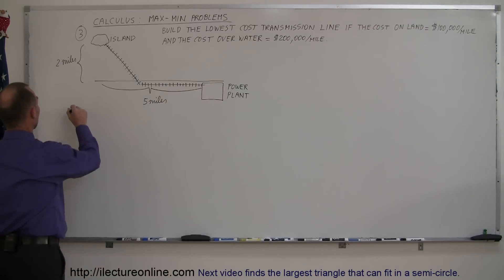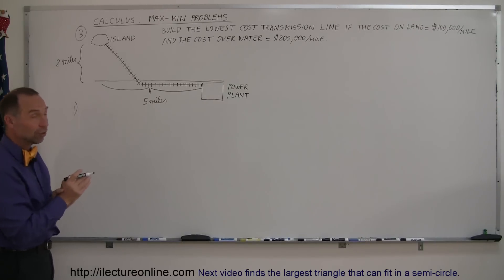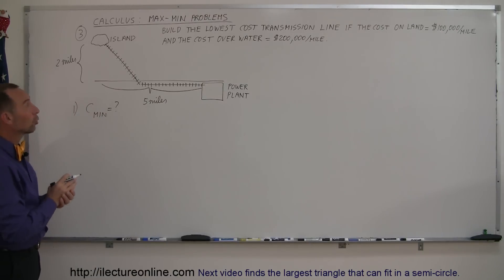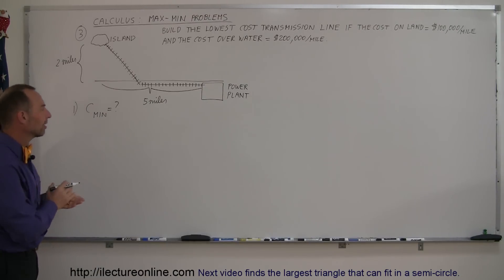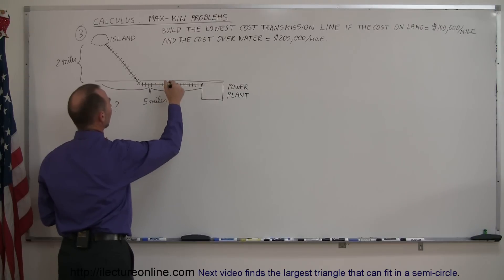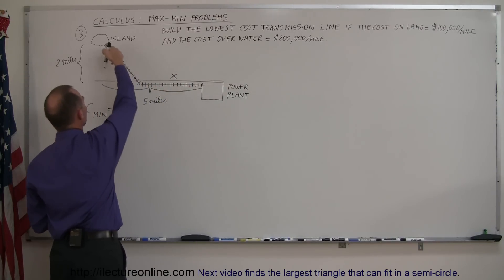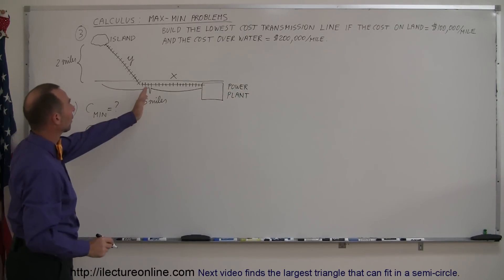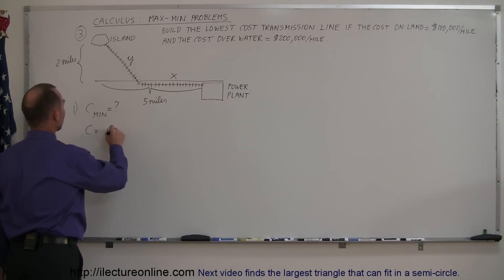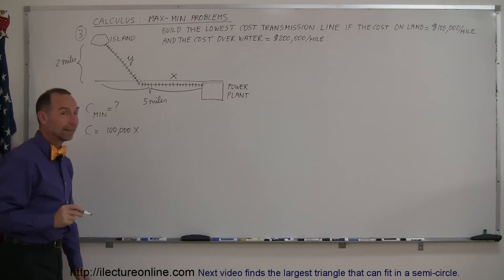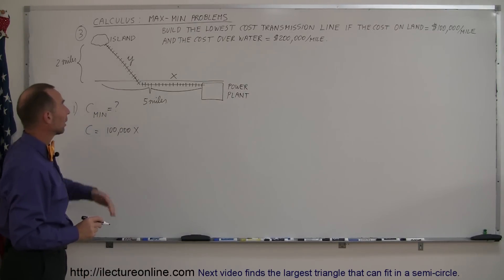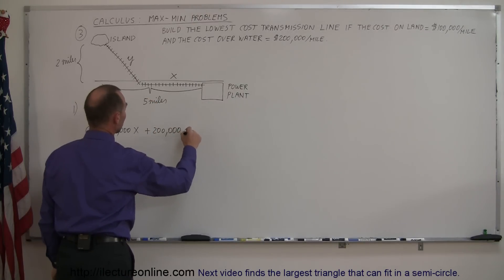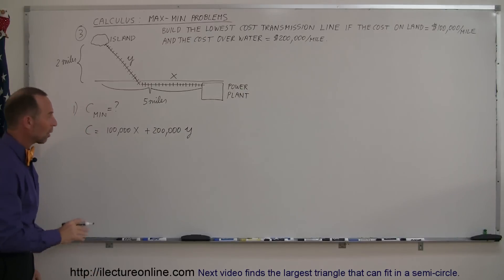Step one: determine what you're trying to maximize or minimize. In this case, we're trying to minimize the cost, so we're looking for C minimum. Step two: find an equation that describes the cost mathematically. Let's call the length of the transmission line on land x, and the length over water y. Then the cost equals 100,000 times x plus 200,000 times y, and we want that to be a minimum.